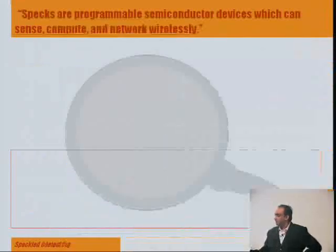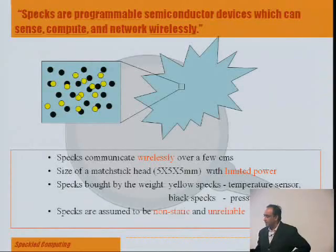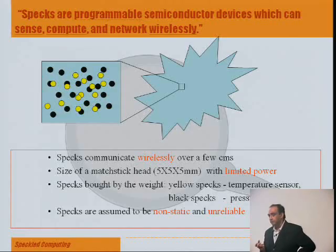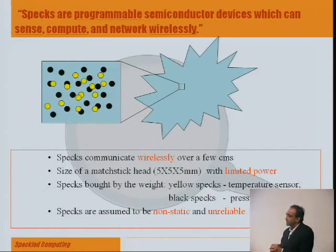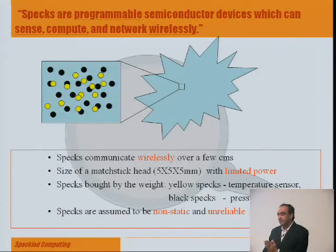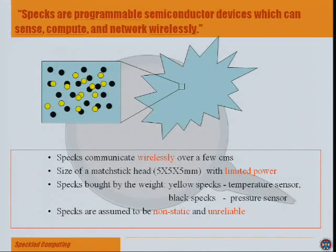The banner headline for the research is to design and realize programmable semiconductor devices which can sense, compute, and network wirelessly. The size of these things — we want them to be small. We call them 5-cube: 5 by 5 by 5 millimeters, which includes the battery as well. I'll show you the first prototype. It's still in the lab, we're still getting it to work, but I have some pictures to show.